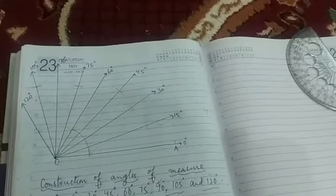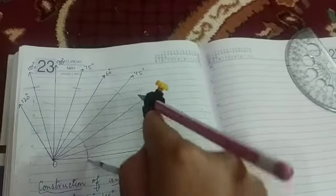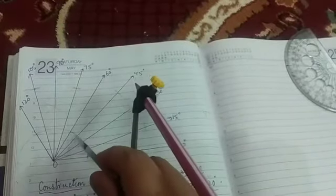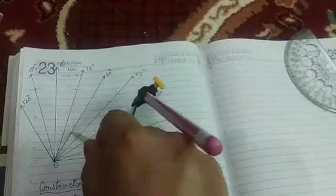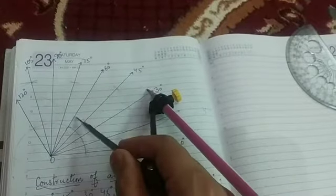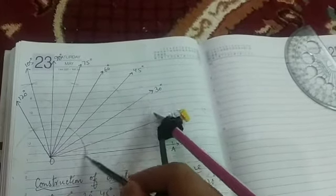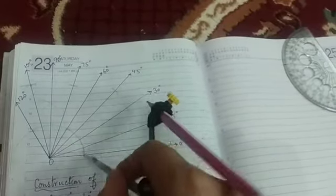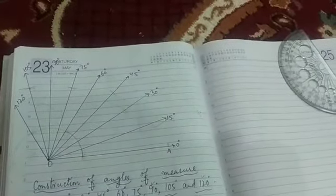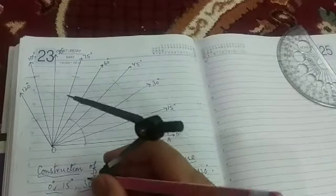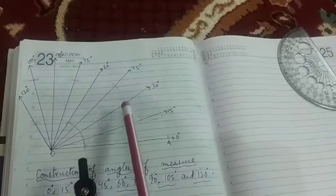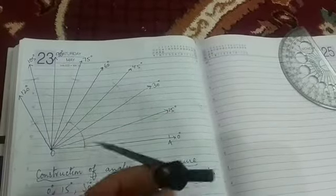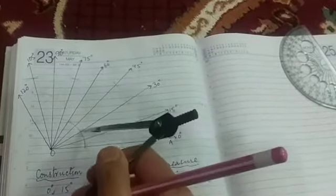Idhar se leke aise arc draw ke, aur 60 se leke phir ek aur arc draw ke. Leken 60 se kahin se bhi nahi, jaha pe 60 ki line is arc ko cut kar rahi hai, wahan se leke. Iska jo radius loongi, wohi idhar 0 se bhi loongi. Jaha pe katte, 30 degree ka angle ban gaya. Aur 15 kaise banega? That will be between 30 and 0. To yahan se ek arc draw karungi, ek arc is 30 se draw karungi. 15 ka bhi ban jayega.